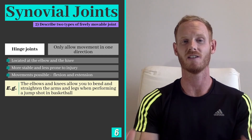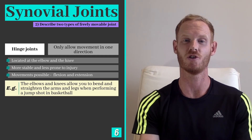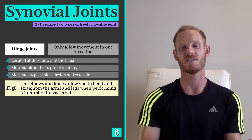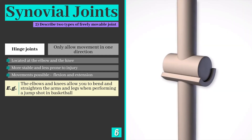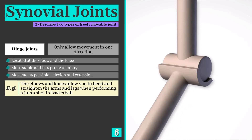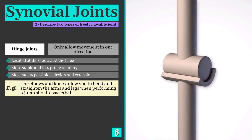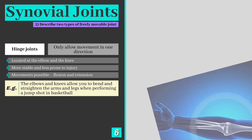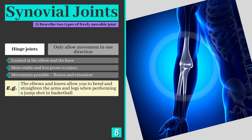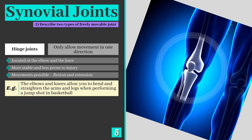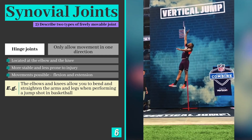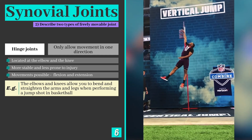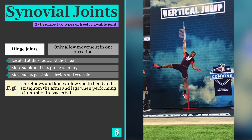Our second freely movable joint is a hinge joint. Hinge joints are only capable of producing movement in one direction and are therefore much more stable and less prone to injury than ball and socket joints. Examples of hinge joints in the human body include the elbow and the knee, which both flex and extend when performing movements such as a spike or serve in volleyball or a jump shot in basketball.